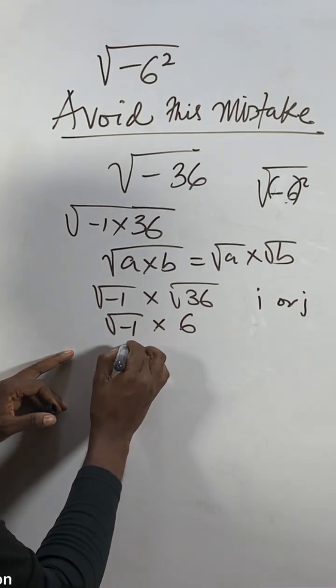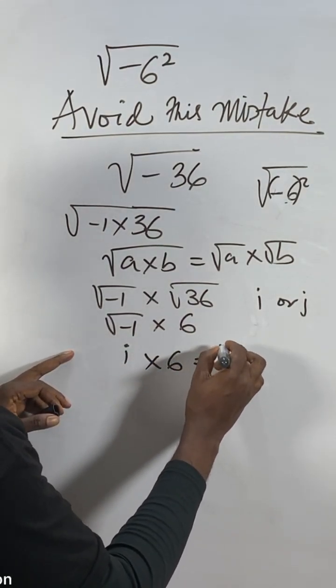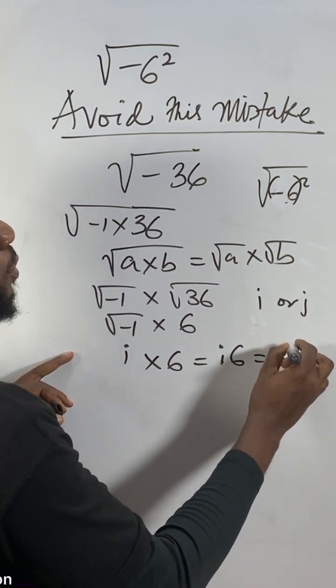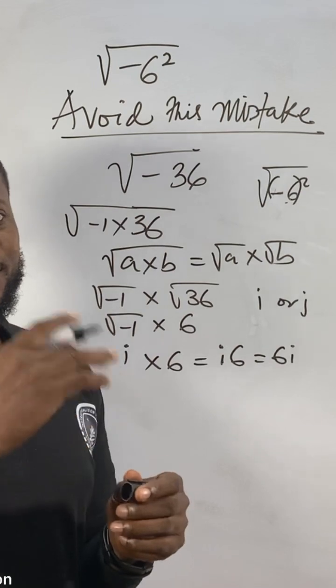So this one now can represent with i times this six, i give me i six, i will feel even put them as six i, anyone correct. I hope you don't learn something.